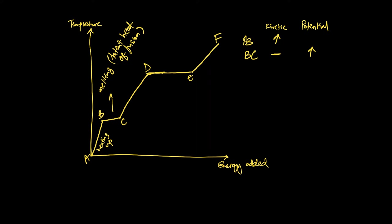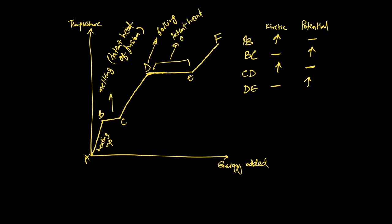Eventually the temperature of the liquid is increased to its boiling point, which is point D. Between C and D, kinetic energy is going up and potential energy is not really changing. But potential energy comes into play from D through E, where kinetic energy does not change but potential energy once again increases. This energy being put in from point D onward is called the latent heat of vaporization.